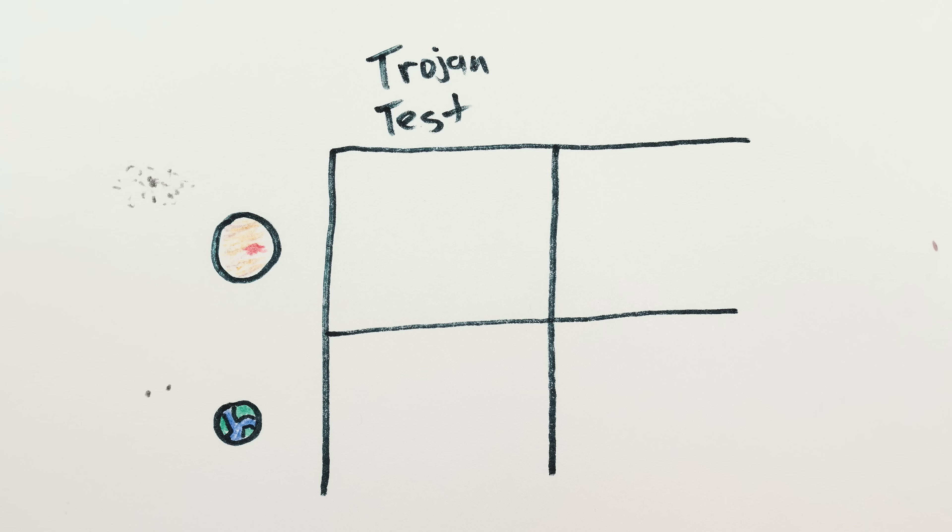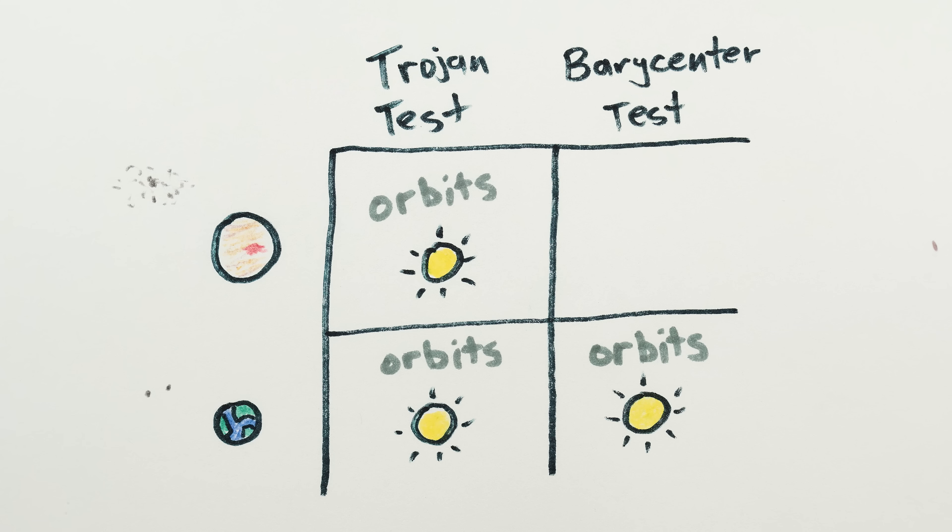Case in point? Both Jupiter and the Earth can in principle have Trojan asteroids, and both do, so by the Trojan test they're orbiting the Sun. Unlike the faulty Barycenter test that thinks Jupiter and the Sun might be binary companions just because their shared Barycenter happens to be outside the Sun.